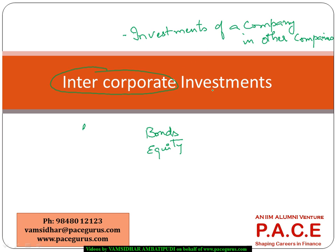Whatever may be the case, all these are classified as intercorporate investments. The main essence of this chapter is how do we handle these intercorporate investments as part of the financial statements — what are the various classifications that exist and how is the typical allocation done in the financial statements for each kind of classification.